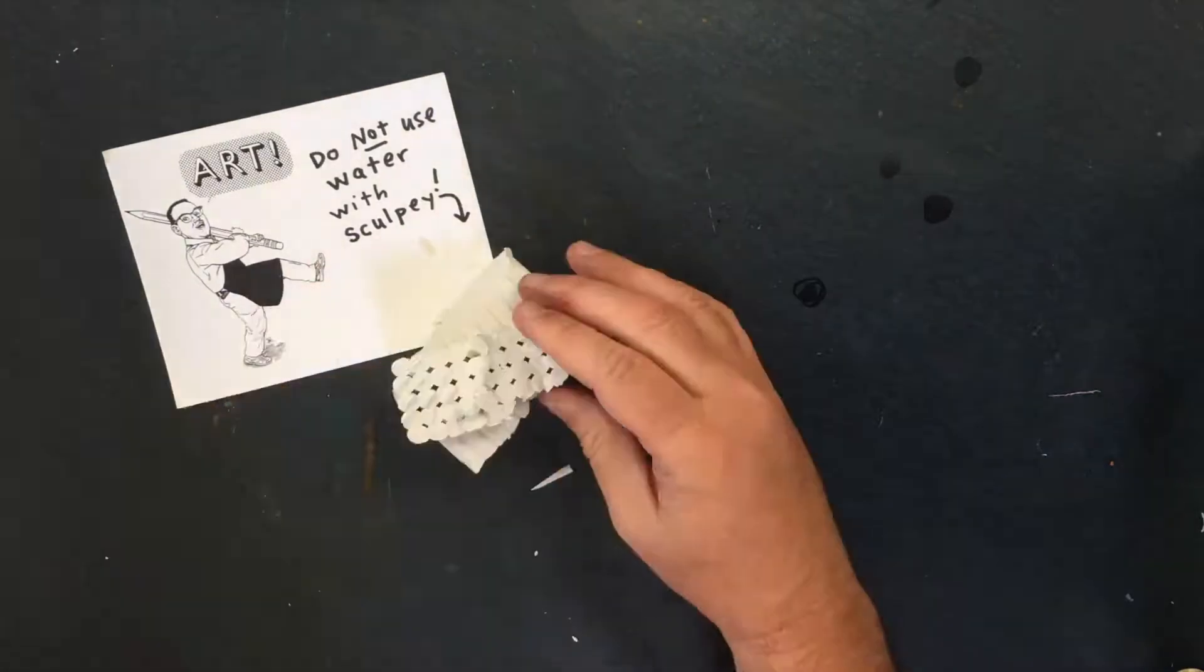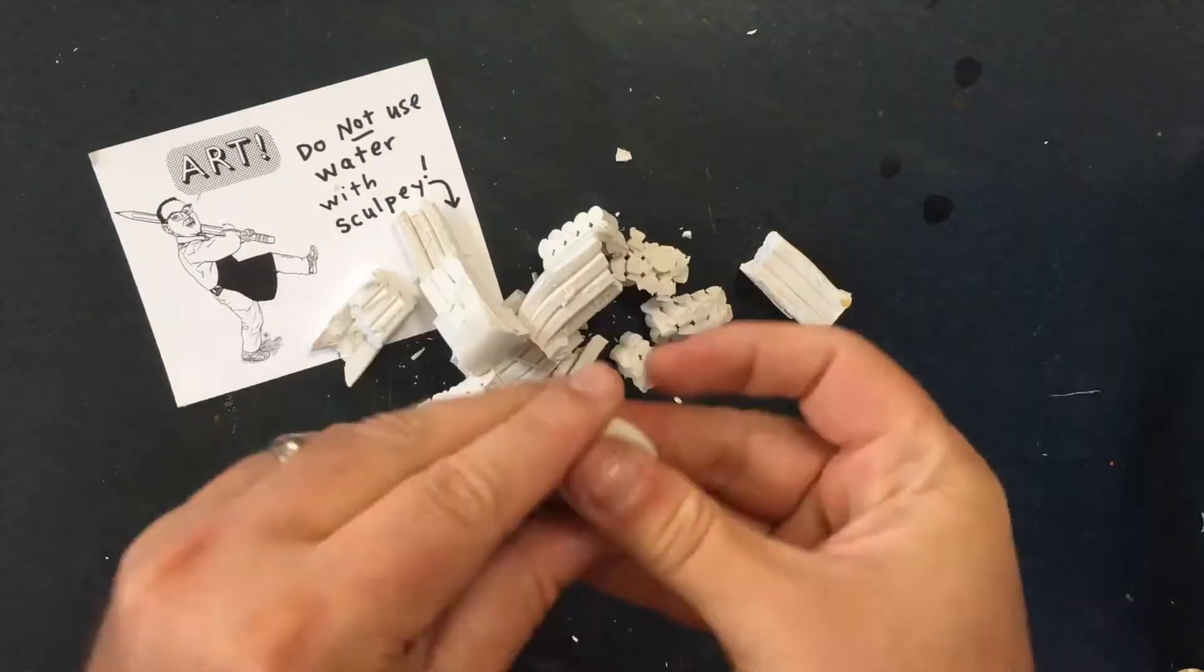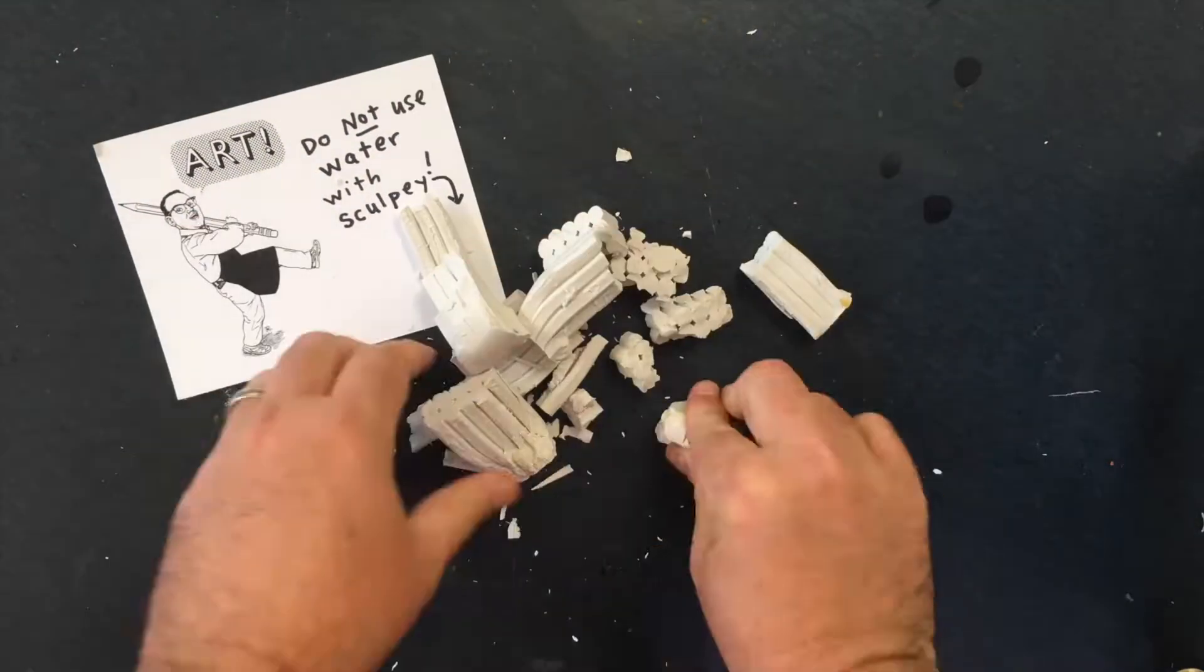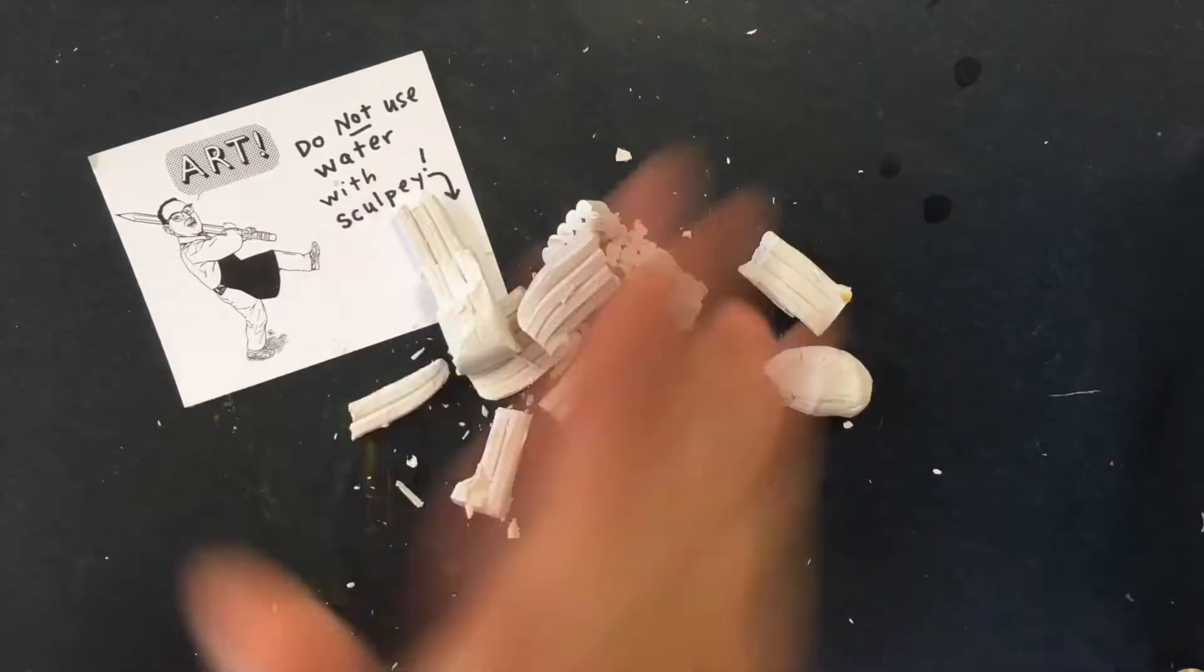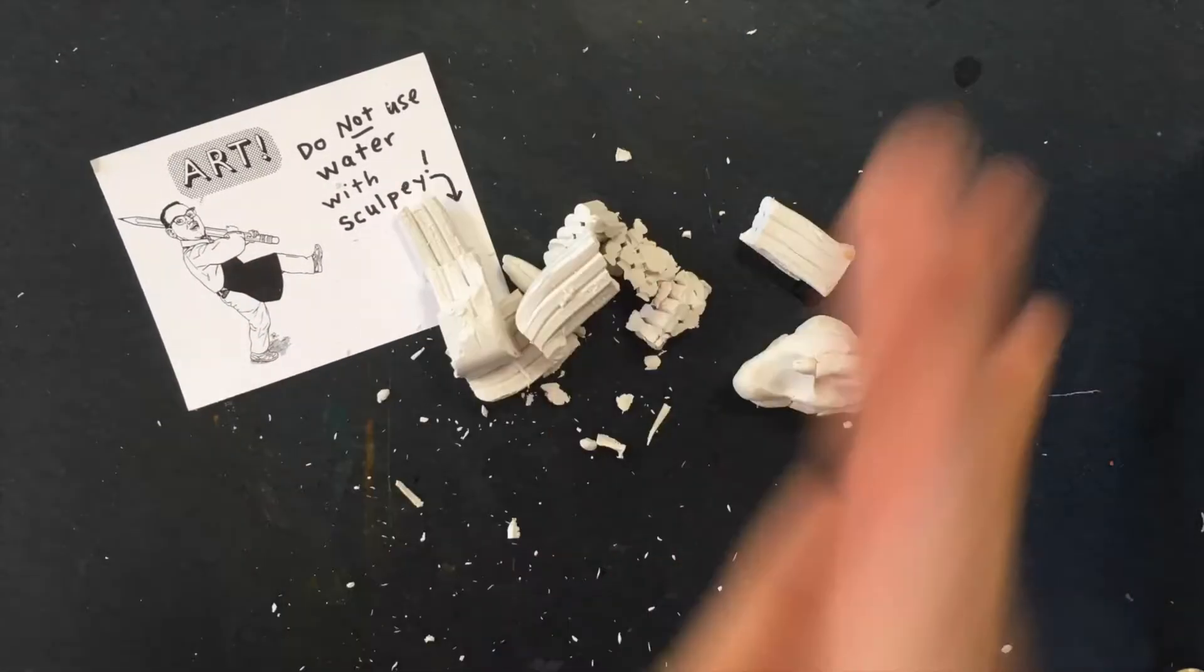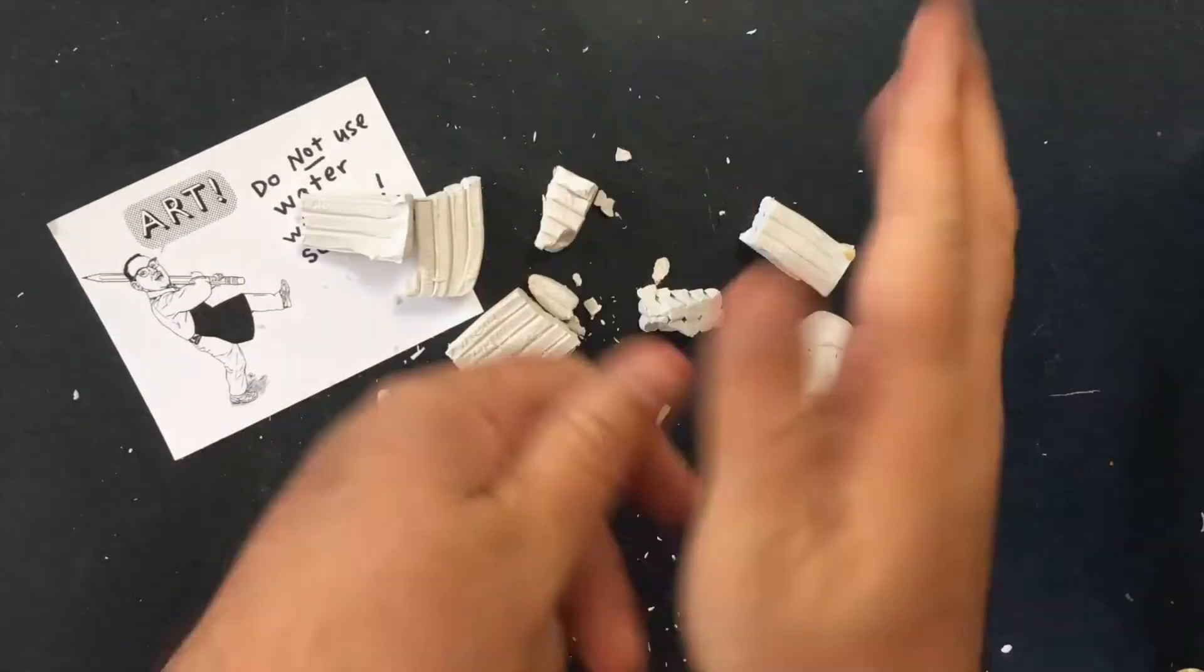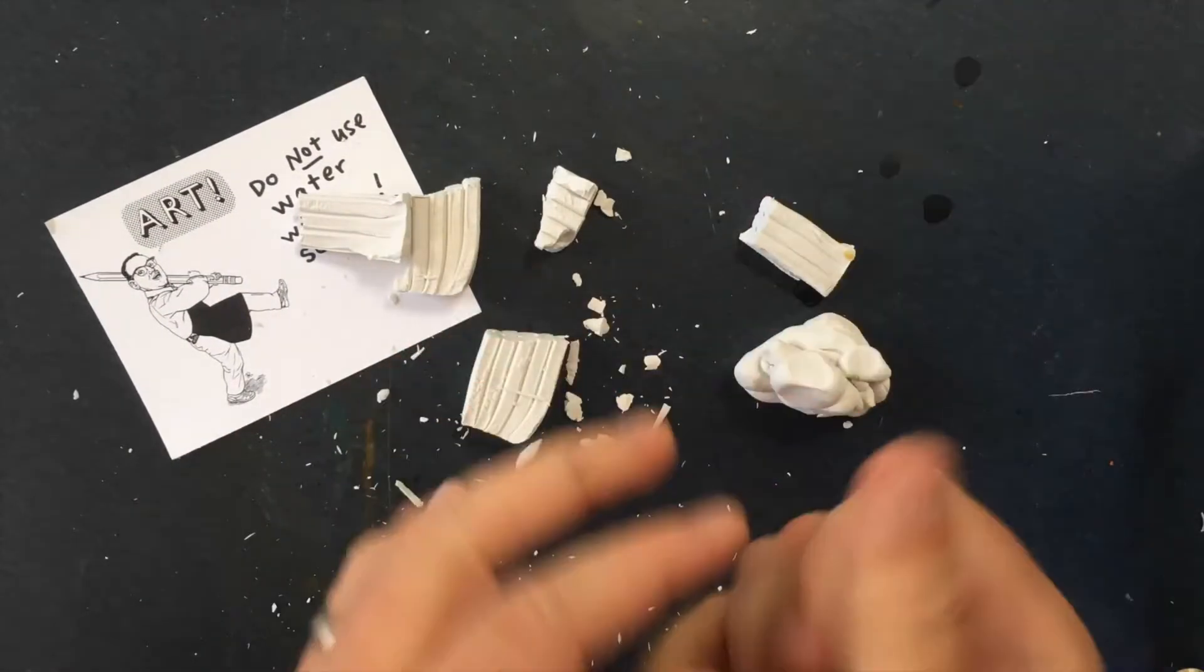We're going to be using Sculpey for these sculptures. Sculpey is an oven-bake polymer clay, a modeling clay, and what that means is you don't have to use water with this clay. Actually, you shouldn't use water with this clay.